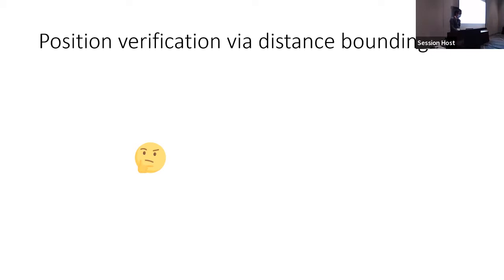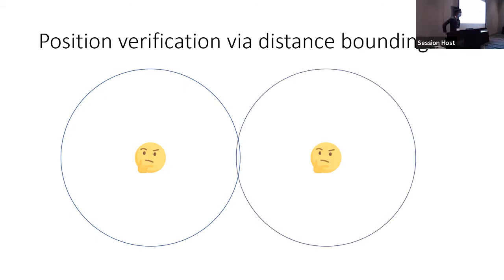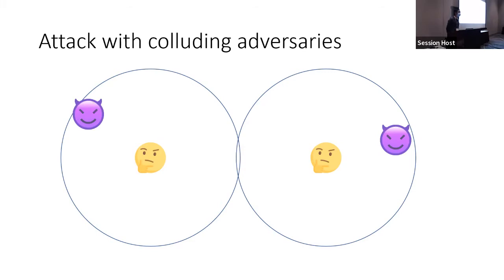The main technique for doing this is called distance bounding. Imagine there is a verifier: you send a message and have the prover respond immediately. By timing how long it takes for the prover to respond, and using the no-faster-than-light principle from general relativity, you can be assured the prover is within a certain radius. Using multiple verifiers and triangulating, you can get a better position estimate.